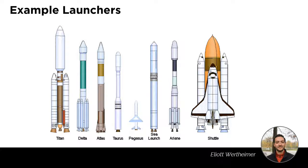This slide shows the relative sizes of different launchers. Titan and the Space Shuttle including its boosters were probably the biggest, followed by Delta, Atlas, Xi Launch and Ariane, with Taurus and Pegasus being the smallest. I hope this was quite helpful and you understood most of the material. If you have any doubts or need clarification on anything, please do not hesitate to ask. Thank you very much.